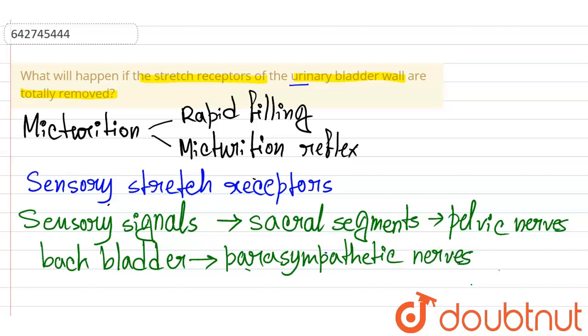Now if the stretch receptors are permanently, are totally removed from the urinary bladder wall, there will not be any stretch reflex. So there will be no stretch reflex.